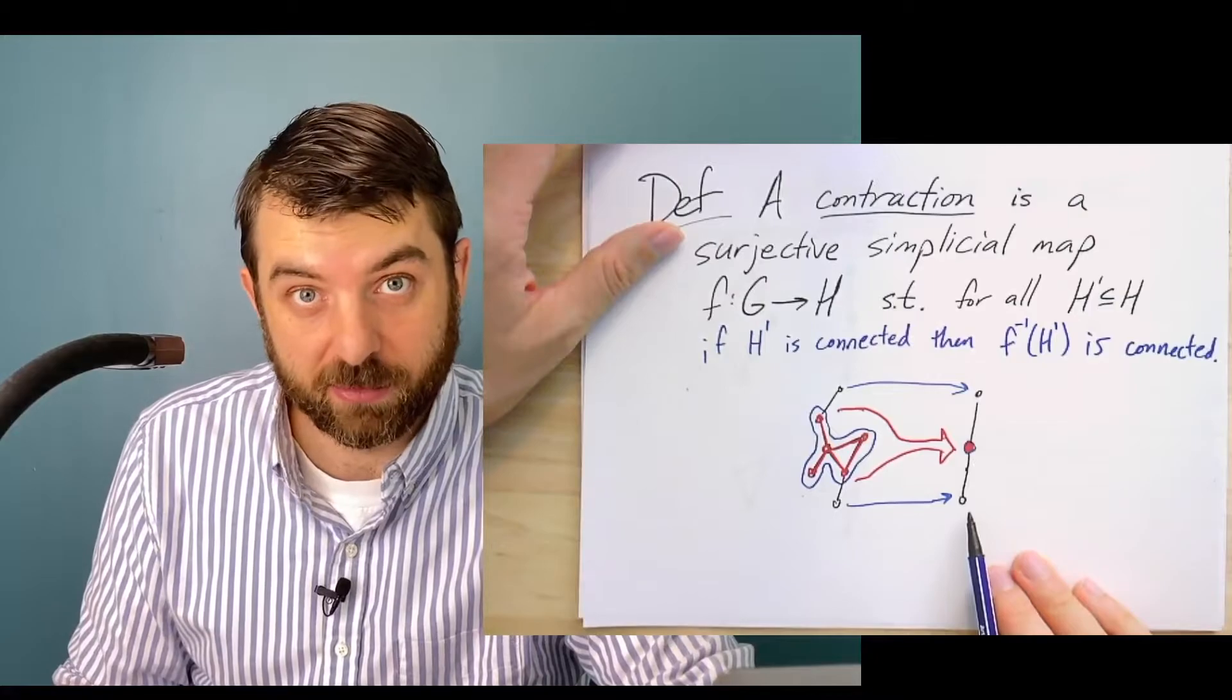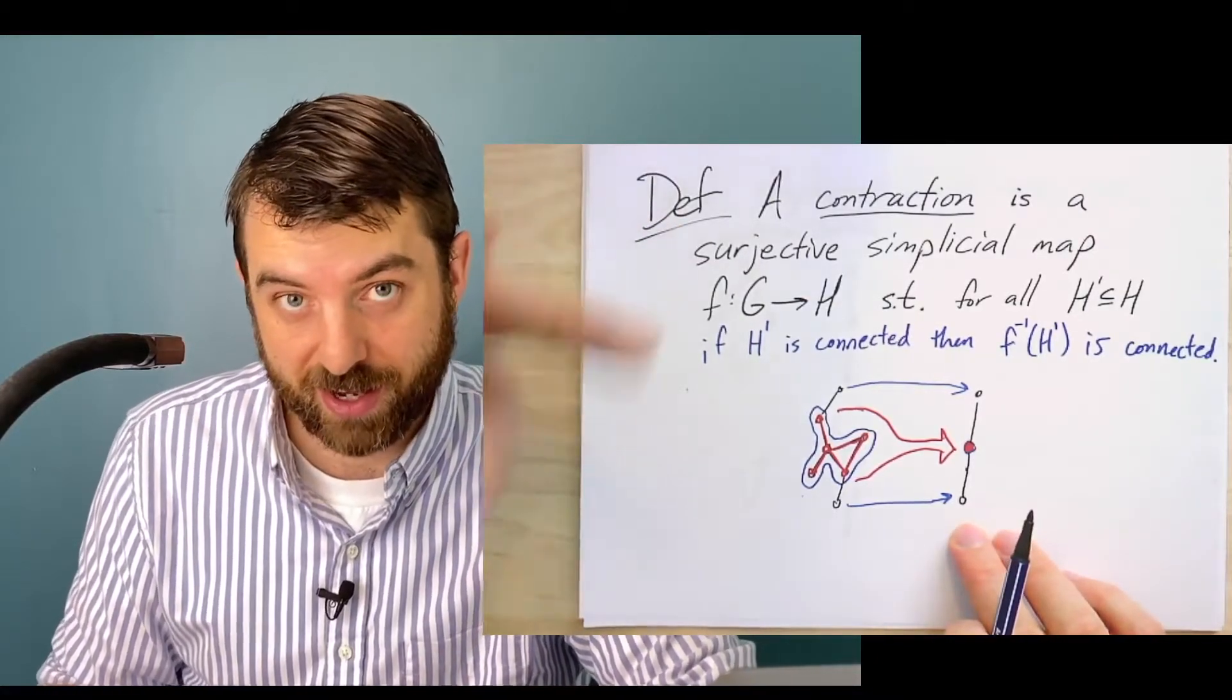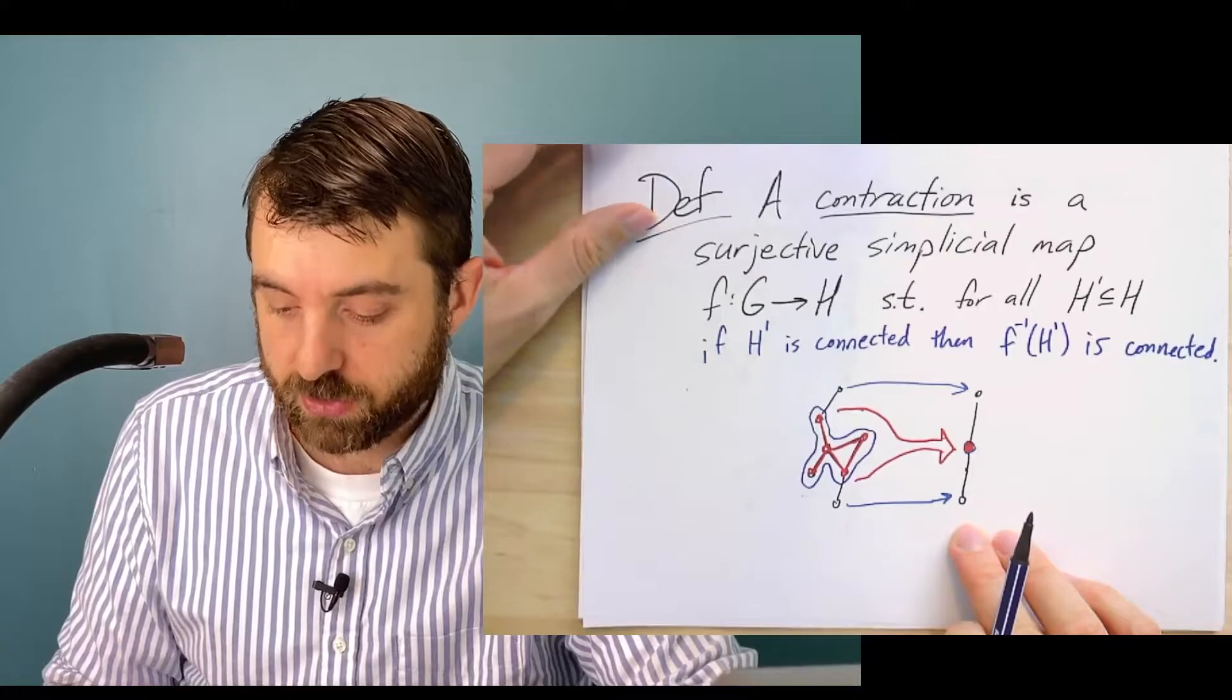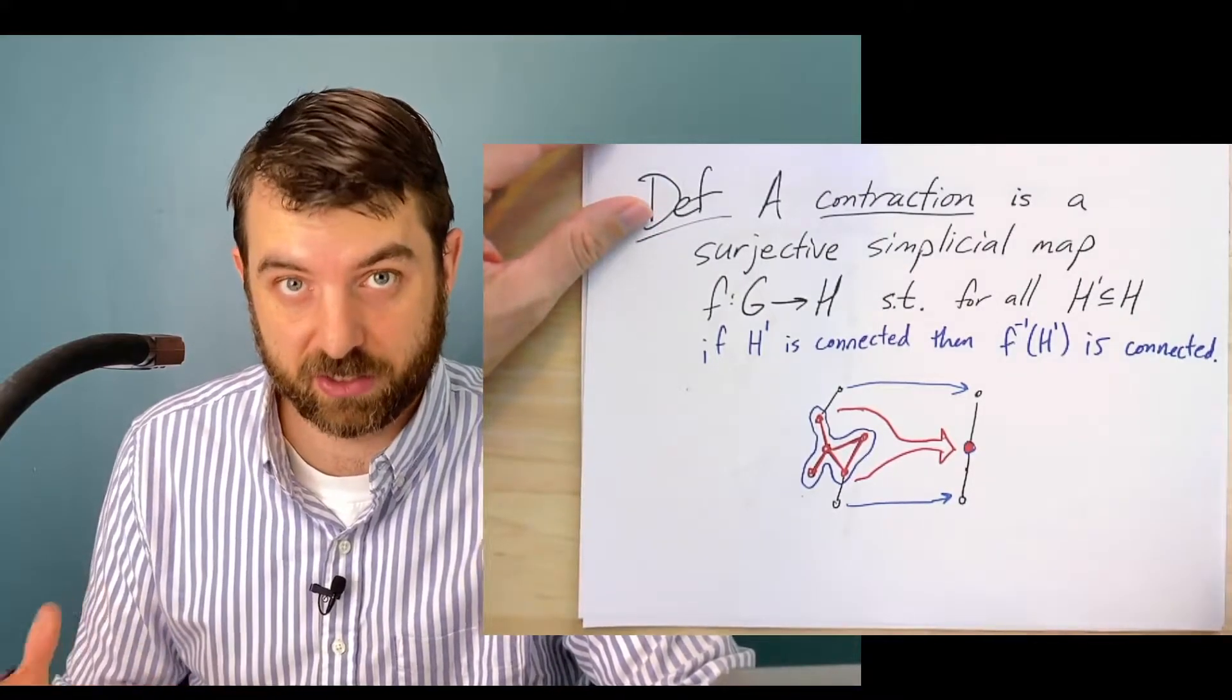If I took any other subgraph of this graph on the right, its preimage is still connected. So it satisfies the definition this is a contraction.